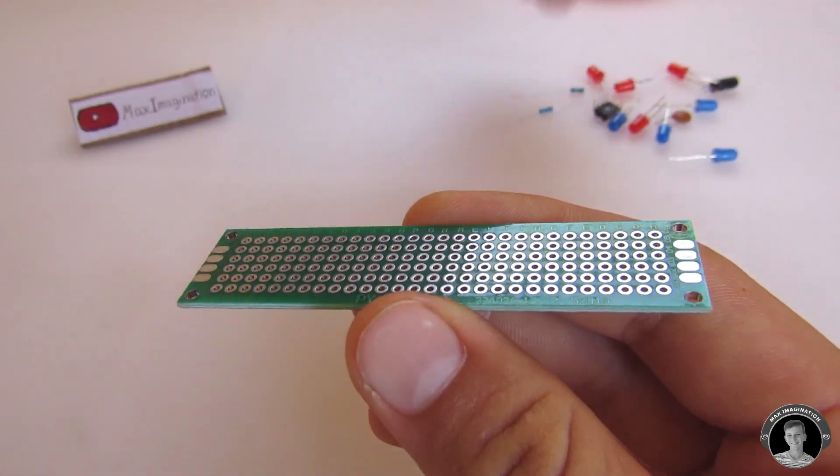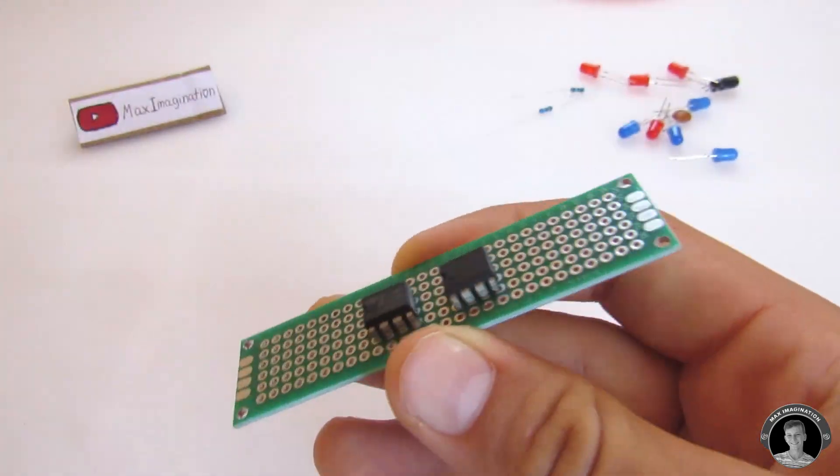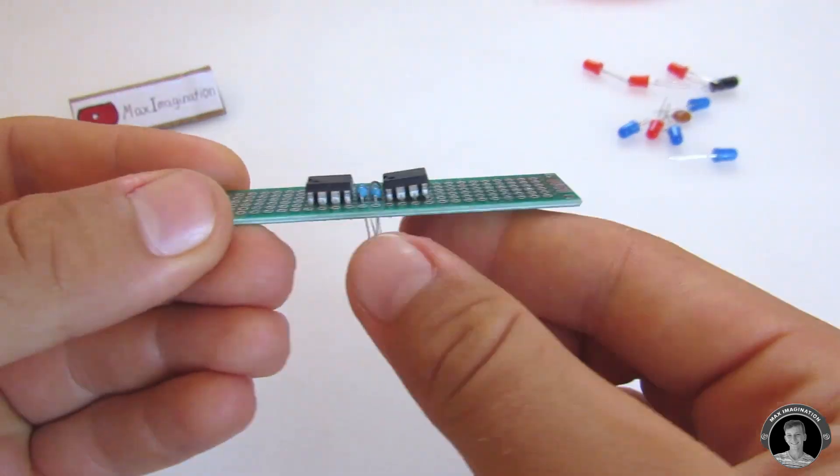And for the realistic police bar lights, you're going to want to do pretty much the same thing. Put in all the components and then solder them in place. The connections will follow up shortly.